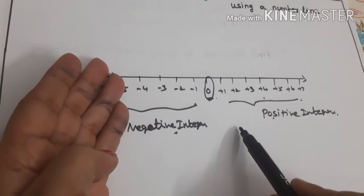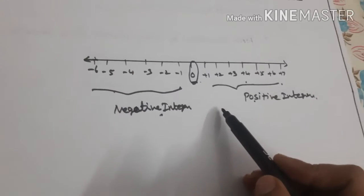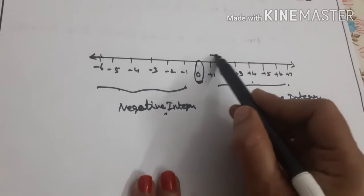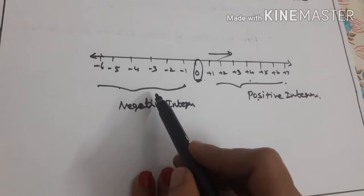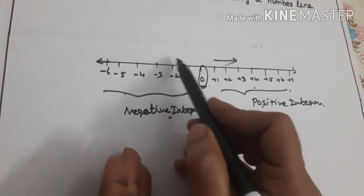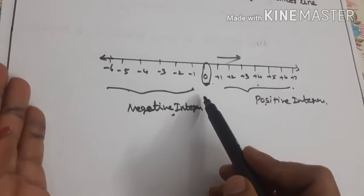If the given number is positive, we have to move right side from 0. If the given number is negative, we have to move left side from 0 in the negative direction.